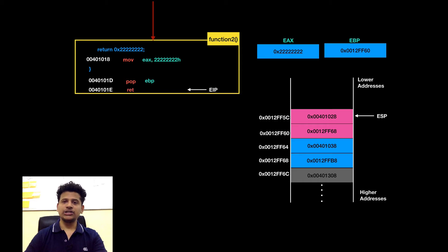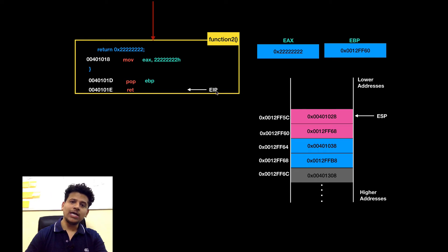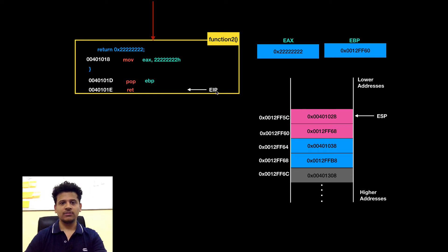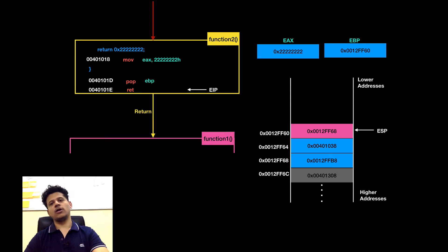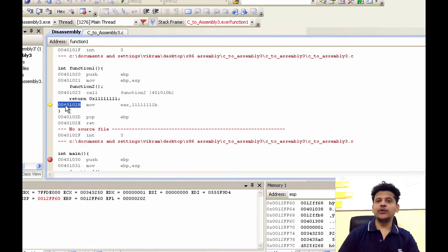Next is a return instruction: we will take the value from the top of the stack, put that into the EIP, and EIP will begin execution from there. This is the same address which we took from the stack, and now we are executing from function 1.